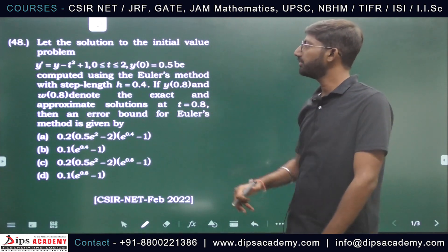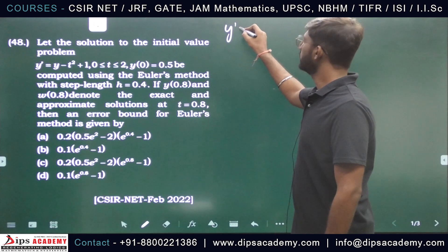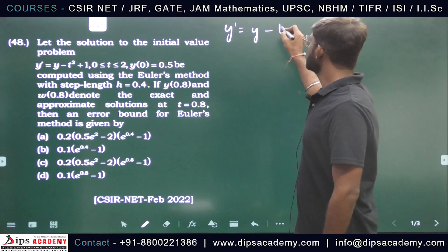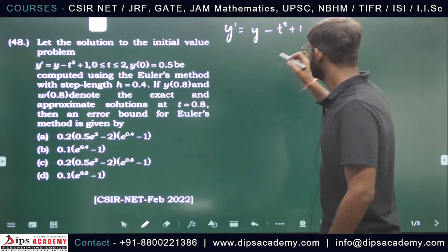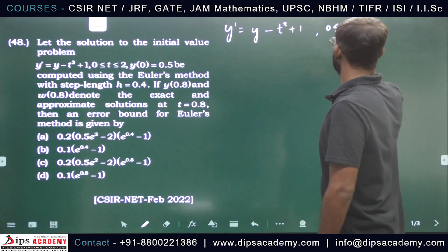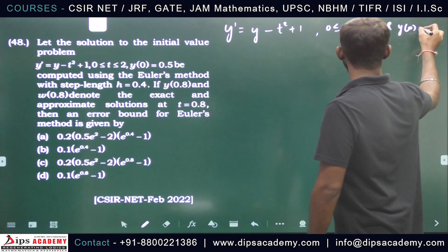It says let the solution to the initial value problem, y dash equals y minus t squared plus 1, where t is between 0 and 2, so 0 less than or equal to t less than or equal to 2, and initial condition is y(0) equals 0.5.